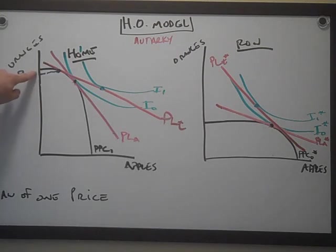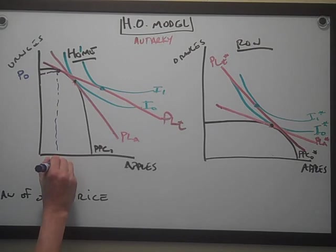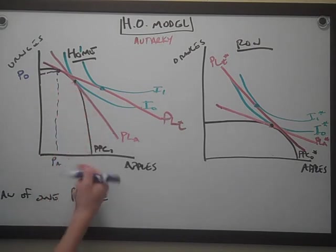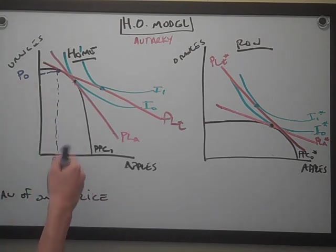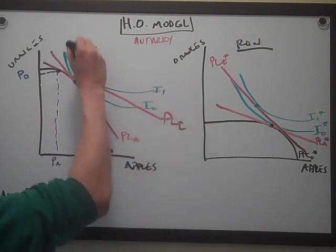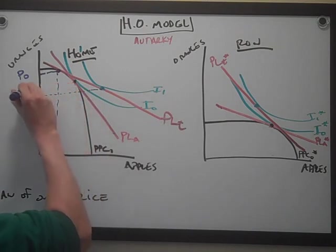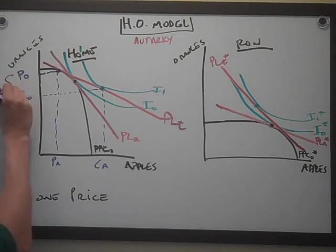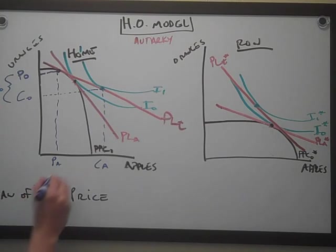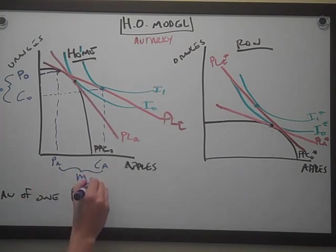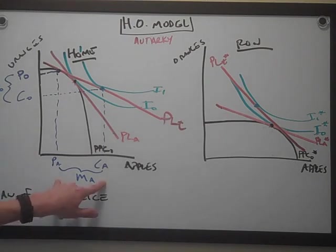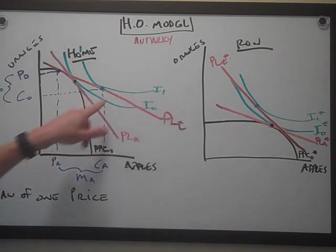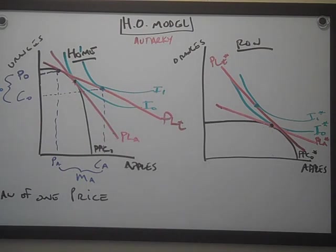They're producing goods in which they have a comparative advantage and producing fewer apples — no wonder, they're terrible at it. The indifference curve shows us what they're consuming: this many oranges and this many apples. The difference between what they produce and what they consume — they're exporting oranges and importing apples. They're trading that many oranges for that many apples. They're happier because they're on indifference curve I-1, and any point on I-1 is better than any point on I-0.